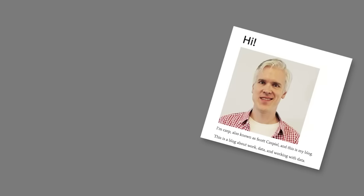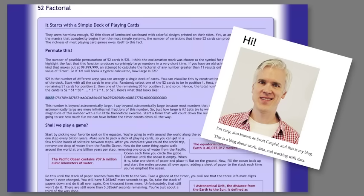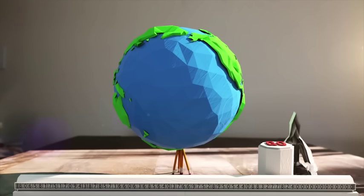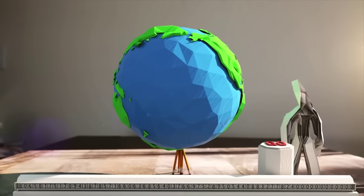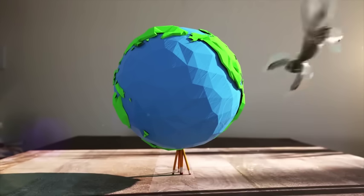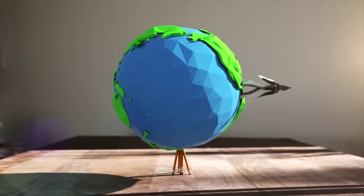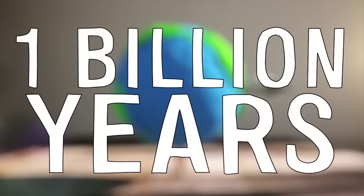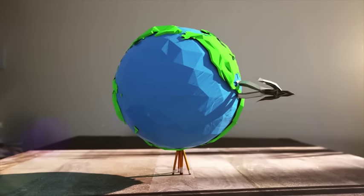But even that doesn't paint the whole picture of just how big 52 factorial is. Scott Chipil wrote some of the most mind-boggling visualizations of the size of 52 factorial. Imagine setting a timer to count down 52 factorial seconds. While the timer runs, stand on the equator and wait one billion years. After a billion years have passed, take a single step forward, and then wait another billion years before taking a second step.